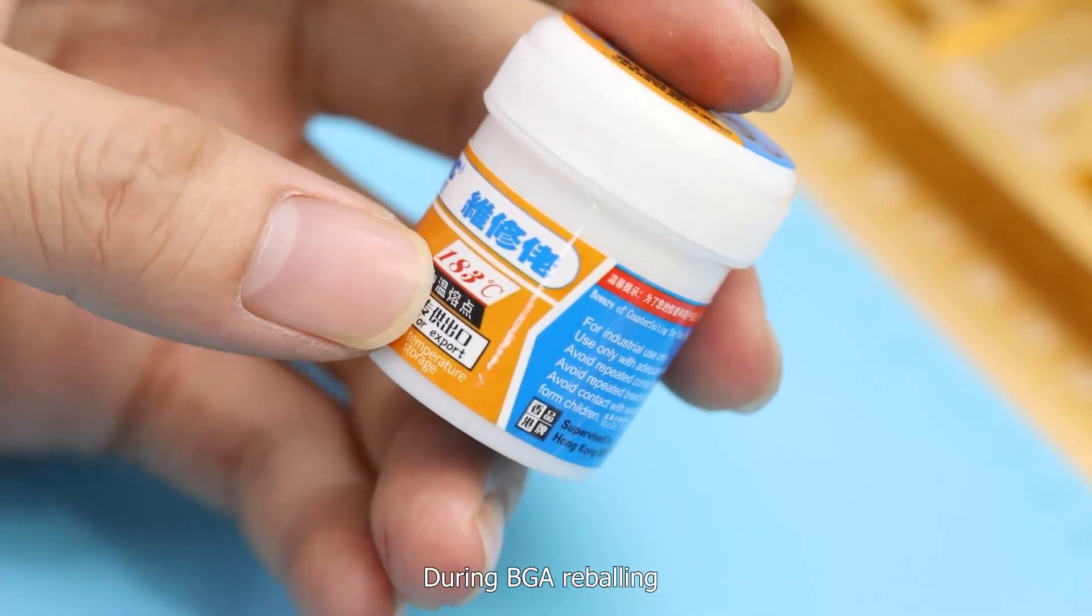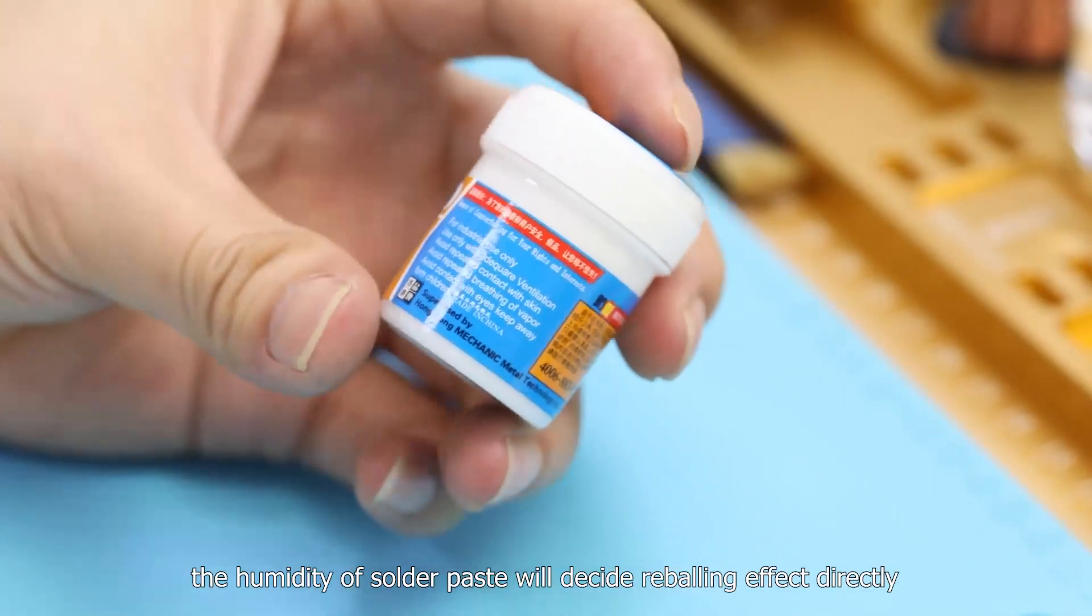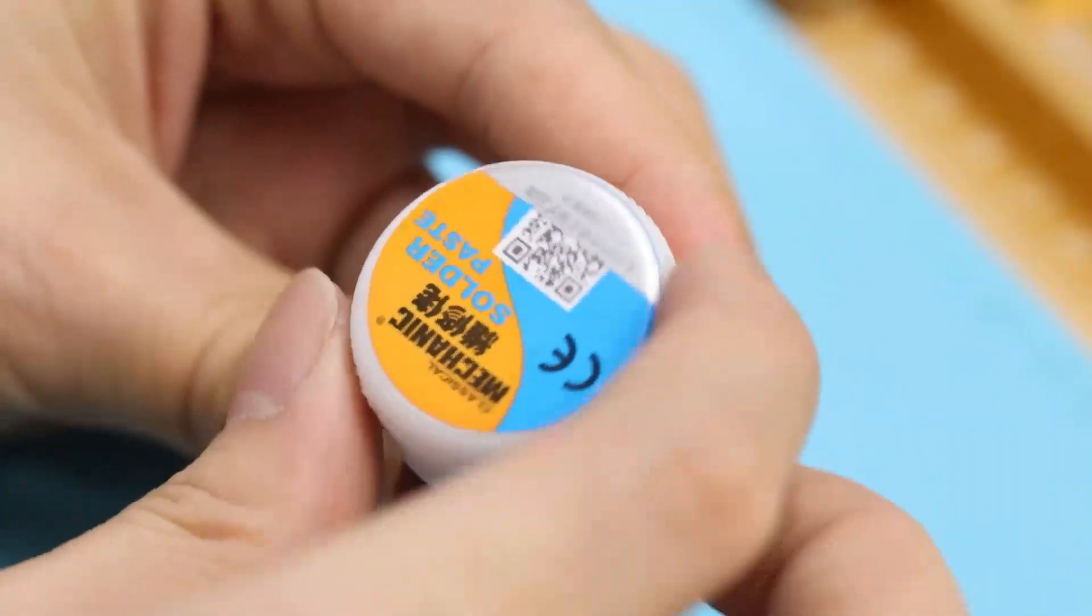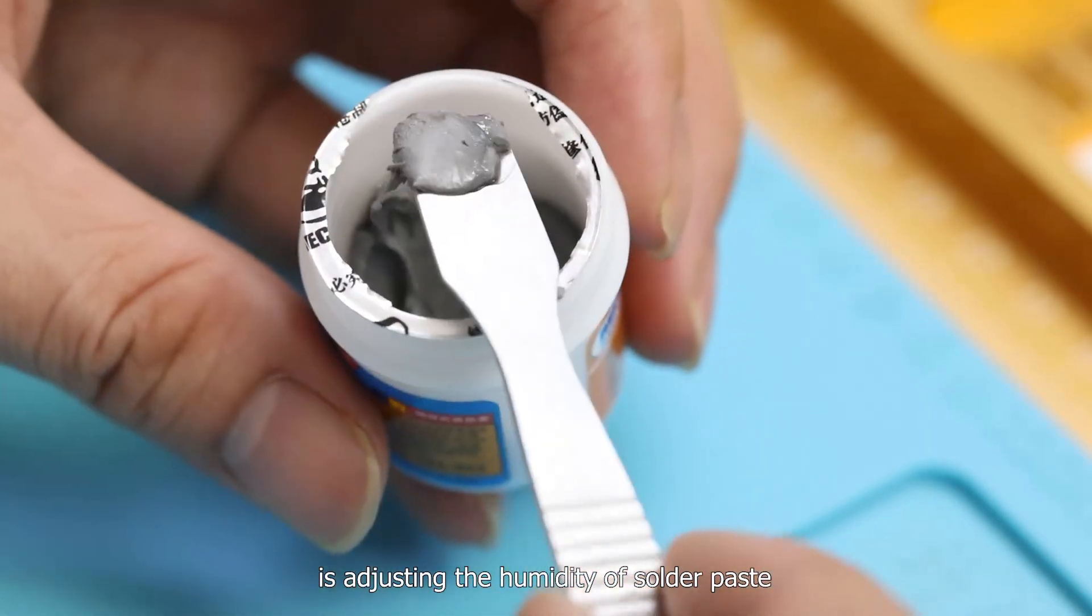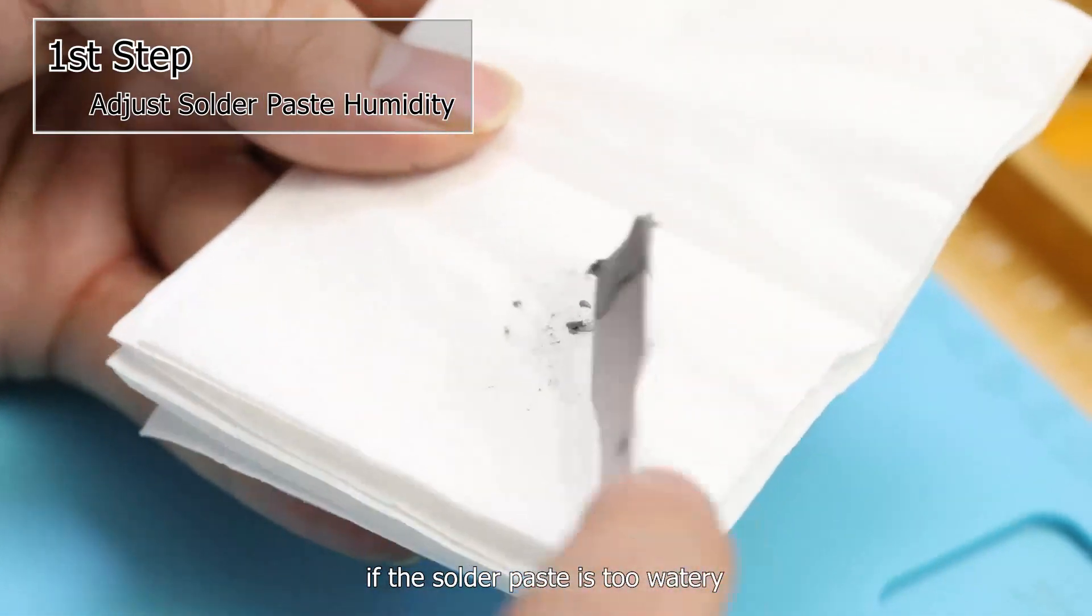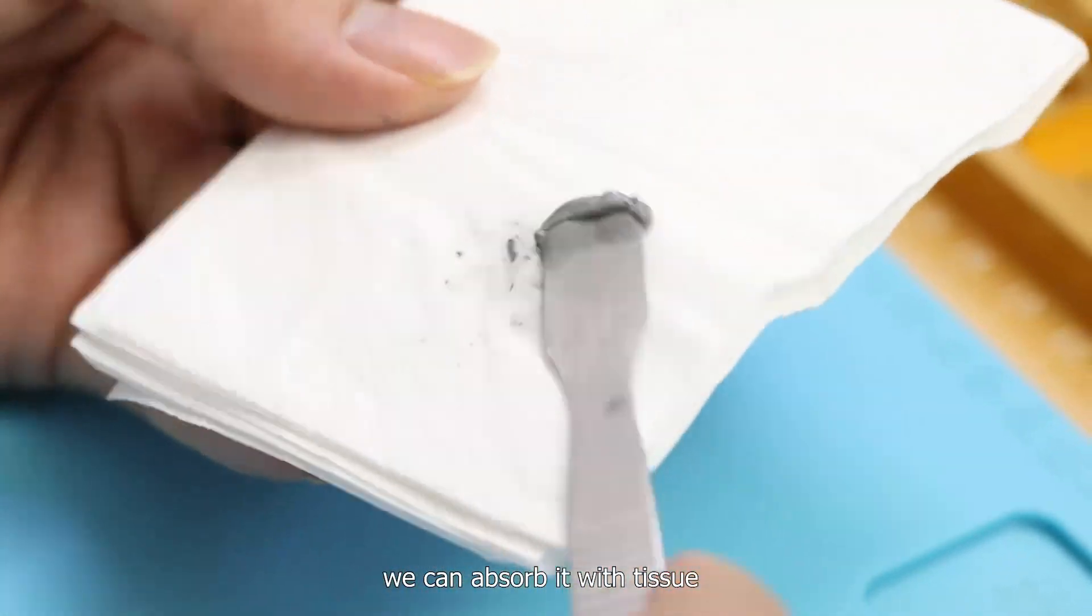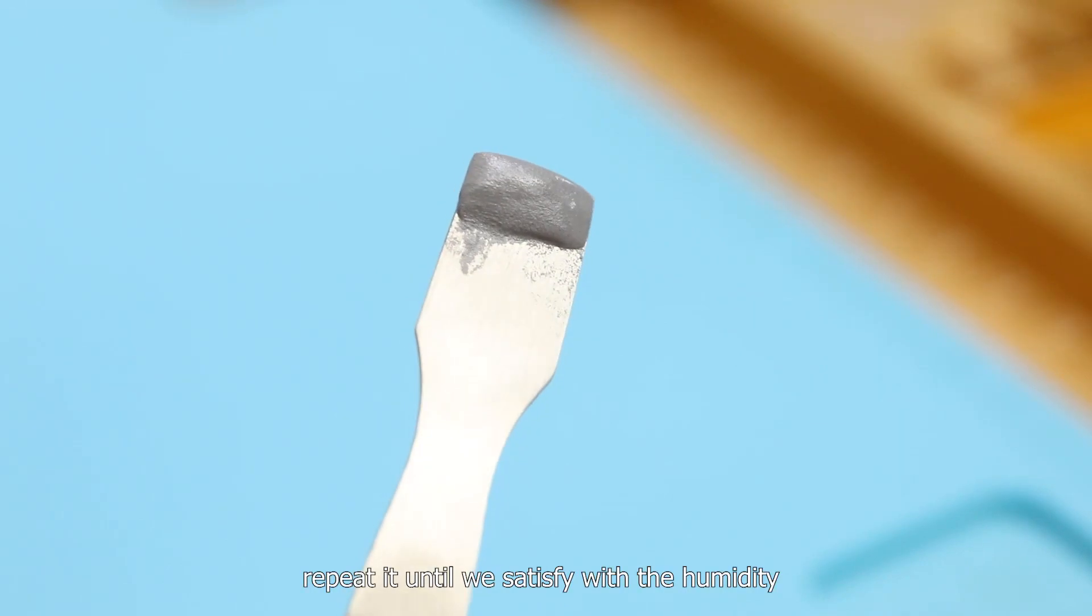During BGA reballing, the humidity of solder paste will decide reballing effect directly. So the first step we need to do is adjusting the humidity of solder paste. Generally speaking, if the solder paste is too watery, we can absorb it with tissue. Repeat it until we're satisfied with the humidity.